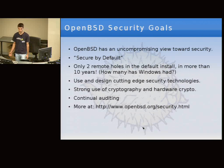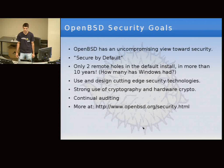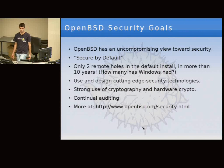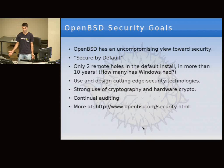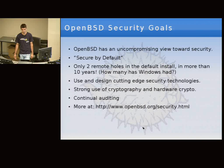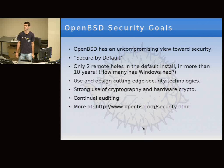OpenBSD is famous because our number one goal is security — that's what everybody thinks when they hear the word OpenBSD. We have an uncompromising view towards security. As a completely volunteer-driven organization, we can do pretty much whatever we want, and we've put security as our number one priority. Our system is also secure by default, meaning we don't enable a lot of services by default — most people don't need to run an NFS server, for example. In the past ten years, we've only had two remote holes in a default installation, which I think is a pretty impressive record.